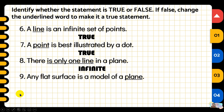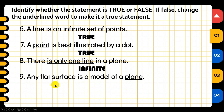Number nine: any flat surface is a model of a plane. The underlined word is 'plane.' Is this true or false? The answer is true.